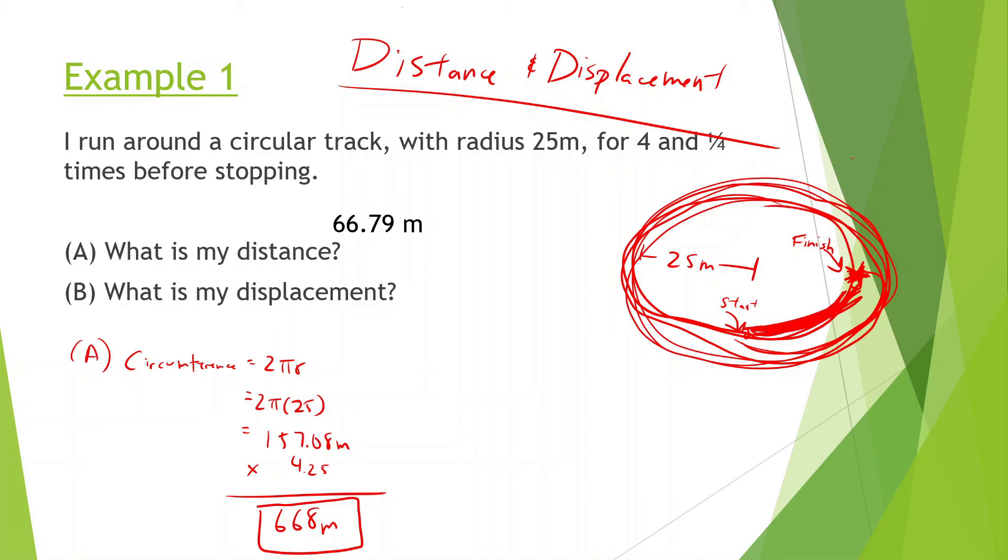However, that is not correct. That is not our displacement. Our displacement is actually from here. It's from here to here, which is slightly different. If we were going from here to here, that would be a quarter of the circumference. But this isn't a quarter of the circumference. What we're going to have to do is use Pythagorean theorem to figure out what this is.